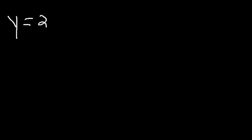In this video, we're going to focus on writing equations of lines that are parallel and perpendicular to a given line, but pass through a point. So let's say we have the equation y is equal to 2x plus 1, and we want to write the equation of a line that's parallel to y equals 2x plus 1 and passes through the point 1 comma 5. How can we do it?